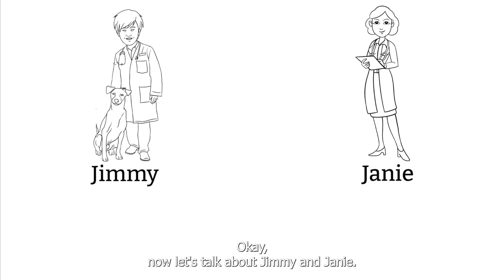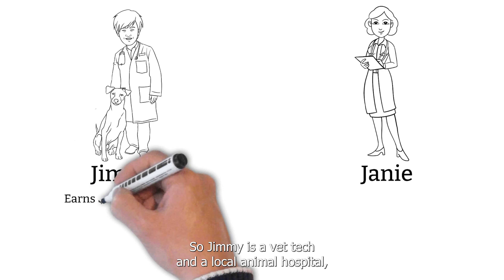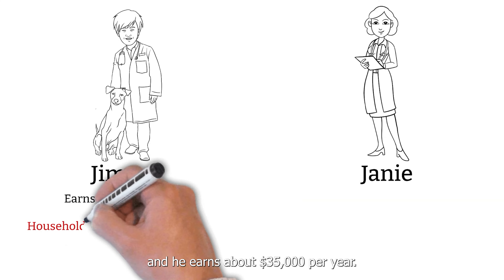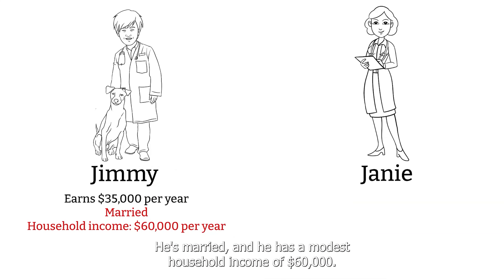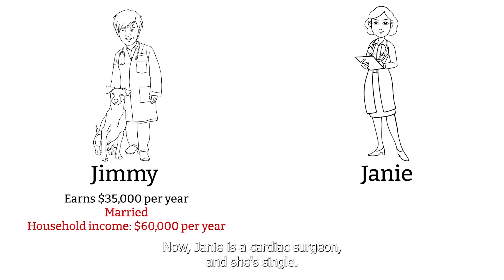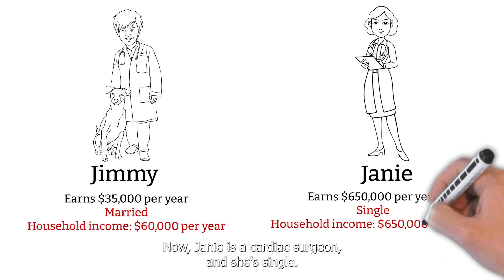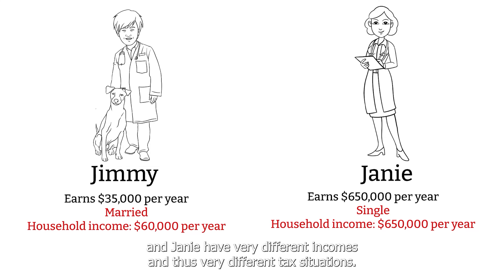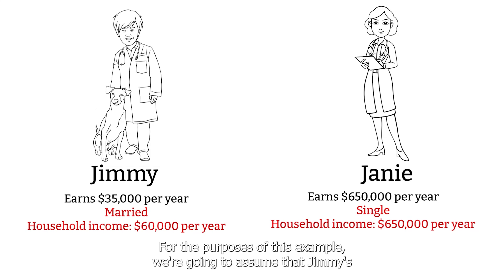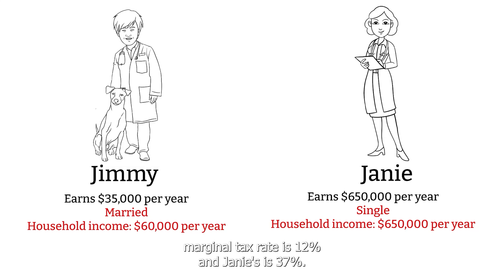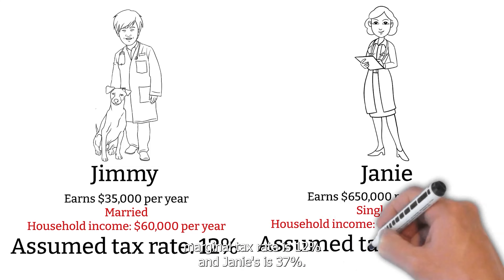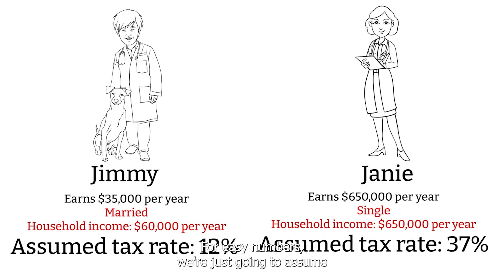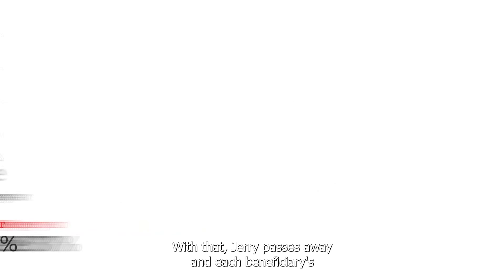Jimmy is a vet tech at a local animal hospital earning about $35,000 per year; he's married with a modest household income of $60,000. Janie is a cardiac surgeon, single, earning about $650,000 a year. Jimmy and Janie have very different incomes and thus very different tax situations. For this example, we'll assume Jimmy's marginal tax rate is 12% and Janie's is 37%, and that these tax rates and investment values stay as they are currently.